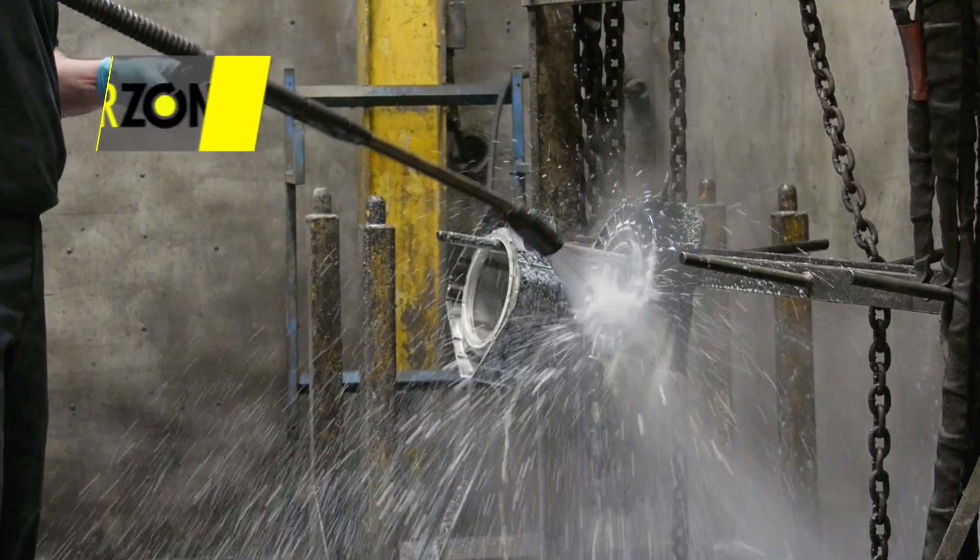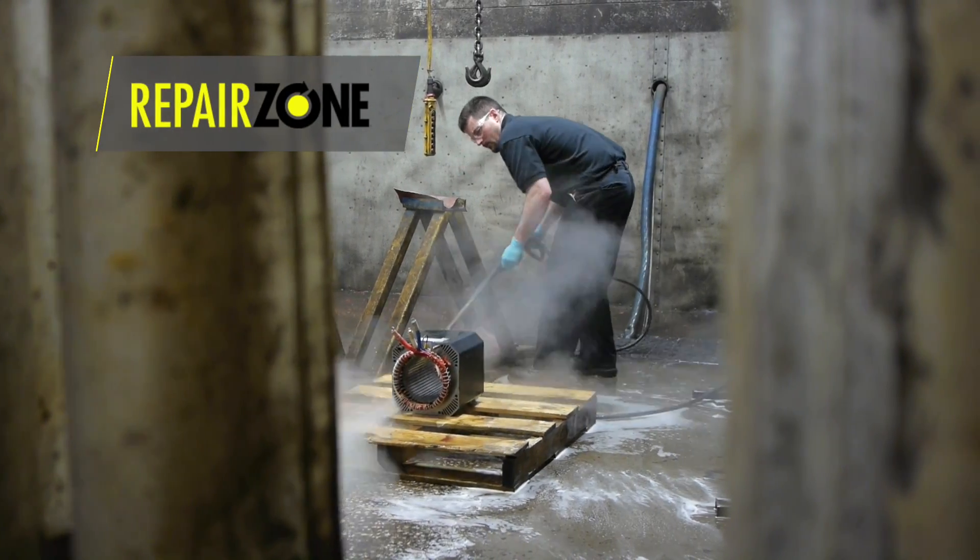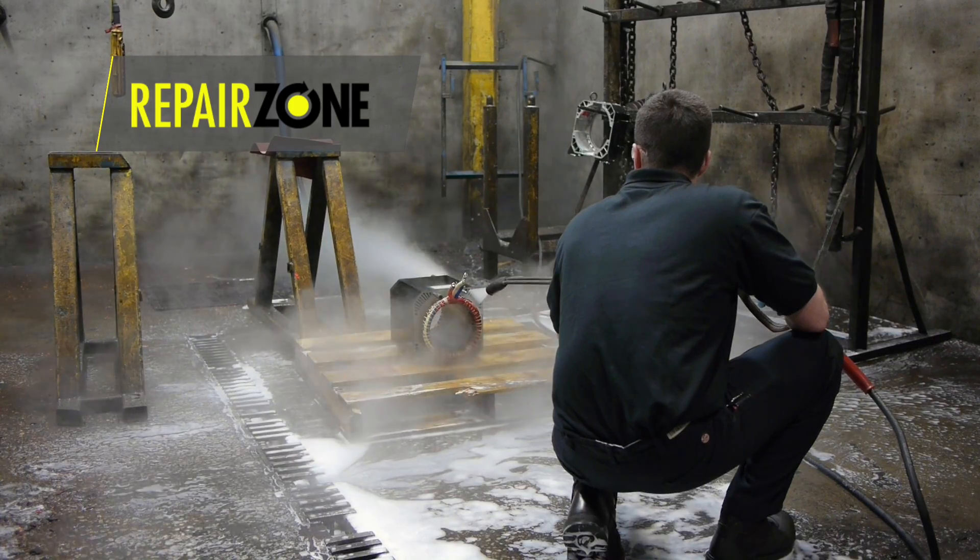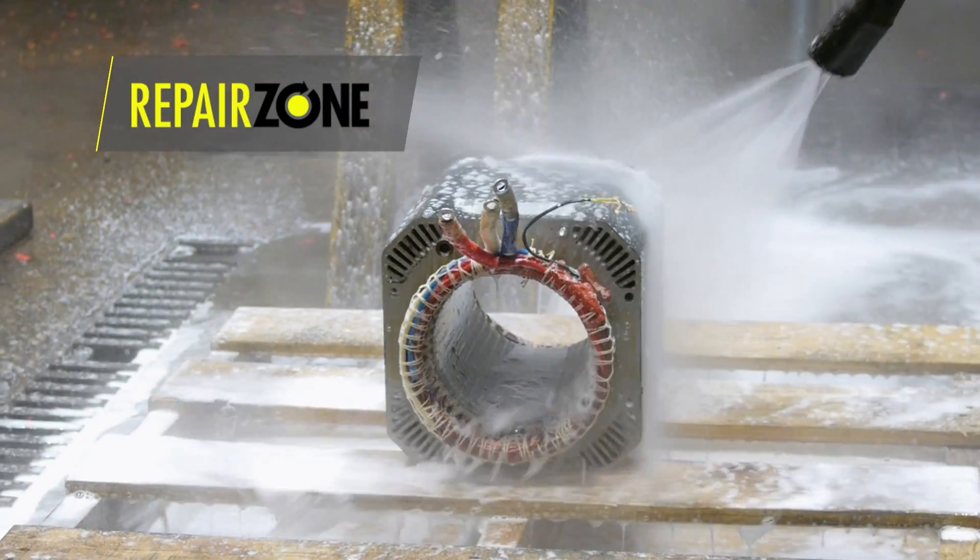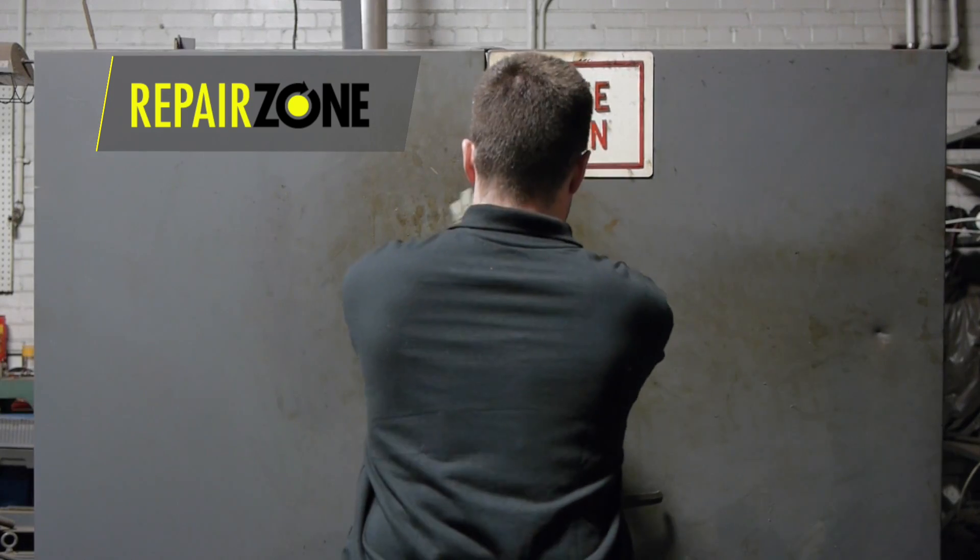The entire unit is washed thoroughly using both a high-pressure sprayer and a parts washing machine, removing all contamination that had built up. It is then baked overnight in our oven.